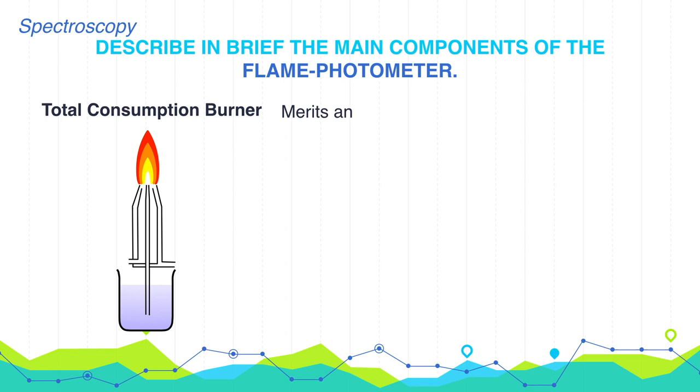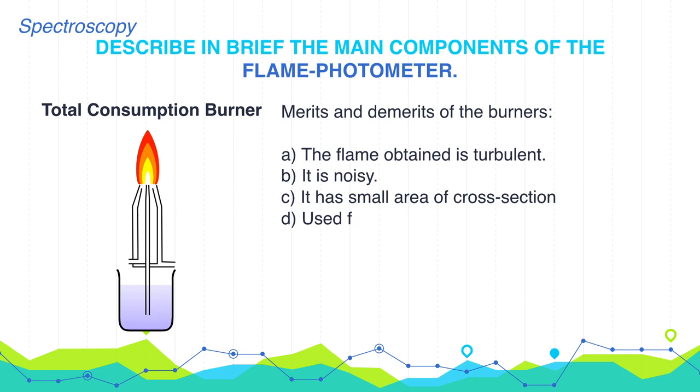Let's talk about the merits and demerits of this burner. First, the flame obtained is turbulent. Second, it is noisy. Third, it has small area of cross section. And last, it is used for most types of flames.